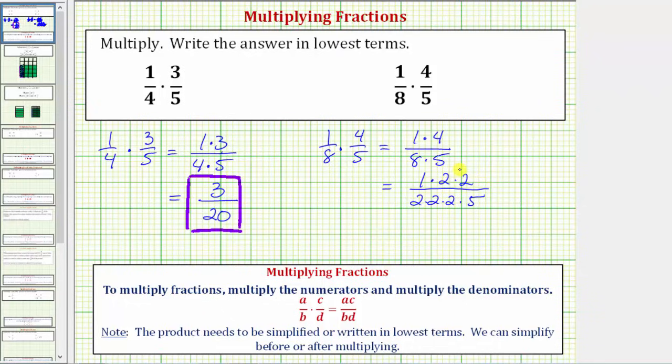We still have a factor of 5. In this form, we can see the common factors. 2 over 2 equals 2 halves, or 2 divided by 2, which equals 1. So 2 over 2 simplifies to 1 over 1 here, as well as here. So now we can multiply, knowing the product will be in lowest terms or simplified. So we have a numerator of 1 and a denominator of 5 times 2, which equals 10.